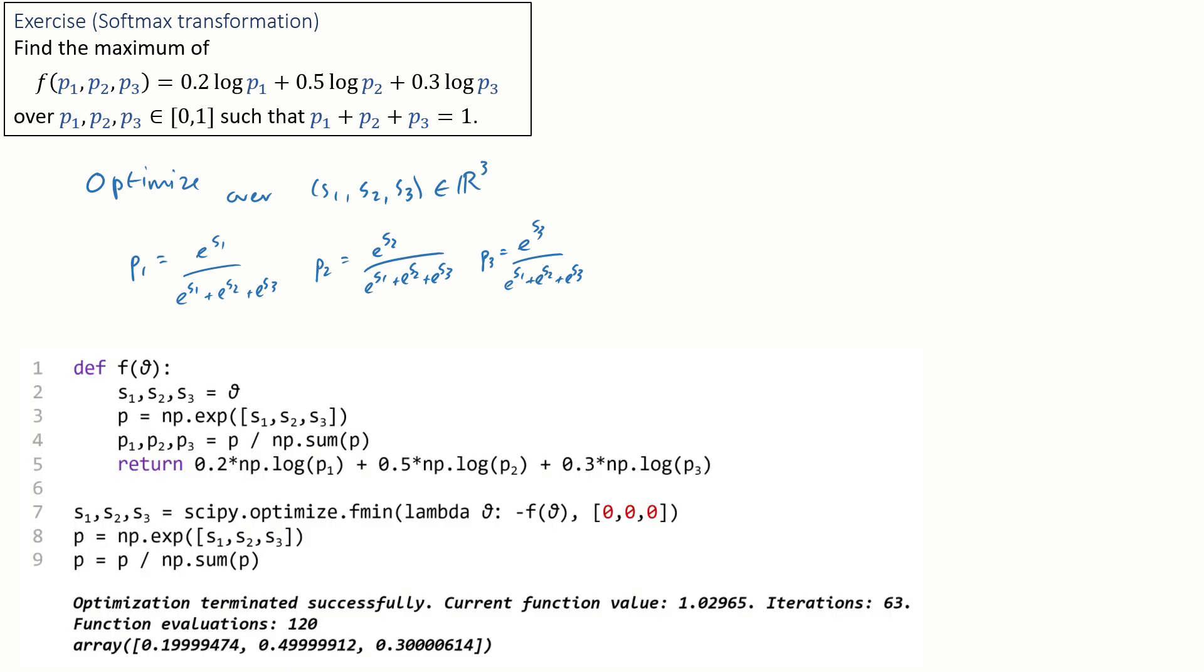Here's the code. I'll define a function. The way scipy works, I have to call a function of a single parameter. Here I'll call it theta. Theta will be a tuple—it will consist of s1, s2, s3. First step: unpack s1, s2, s3, then compute the function we want after transforming into p's.